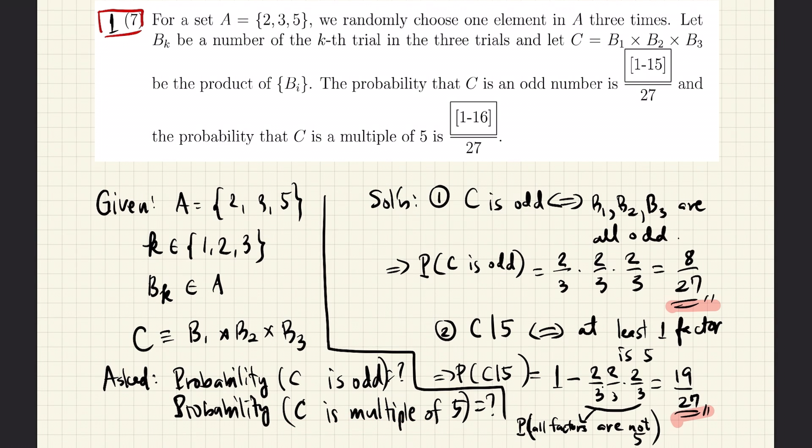The only way that this is not a multiple of 5 is for the first number to be either 2 or 3, the second number to be either 2 or 3, and the third number to be either 2 or 3. In each case, we avoid the number 5.